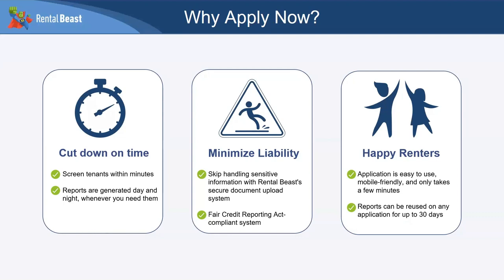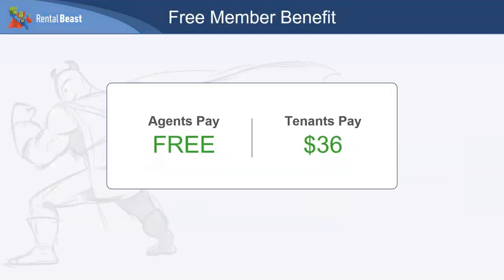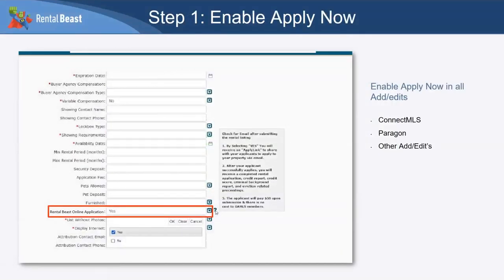Happy renters: the system is easy to use — an application can be started and paid for in about 15–20 minutes. Renters get a copy of their credit report so they can see what the landlord is viewing. They also get unlimited use of their application for 30 days — a one-time $36 fee covers multiple applications to properties using Rental Beast's system. So yes, if a tenant applies once and another property is also using the Rental Beast application, they can reuse it within that 30-day window.